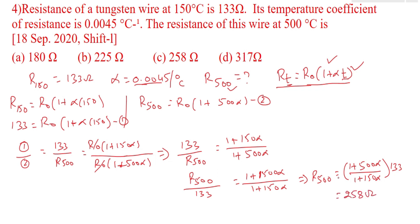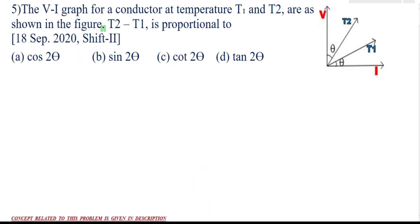So 258 ohm is the answer for resistance at 500 degrees, which is option C. Now let us go to our next question. The VI graph for a conductor at temperatures T1 and T2 are as shown in the figure. T2 minus T1 is proportional to — we have to determine what quantity T2 minus T1 is proportional to.